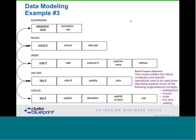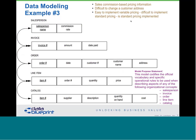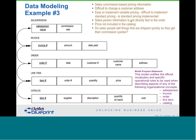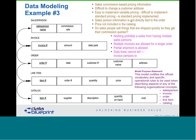Here's our third example — they are clearly doing sales commission-based pricing. It's difficult to change a customer address because a customer address is part of an order. You could implement variable pricing, but it would be very difficult to implement standard pricing given that salesperson information is not tied directly to the order and prices are not included in the catalog. We might also ask: do salespeople sell things that are shipped quickly so they get their commissions quicker? Nothing prohibits a sale from having multiple salespeople attached, multiple invoices are allowed for a single order, and partial shipment is allowed. Both forward and reverse engineering are very useful here.